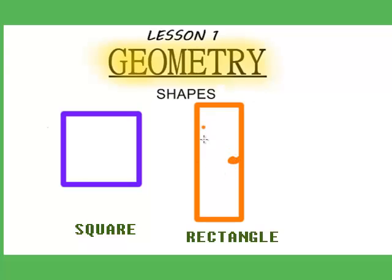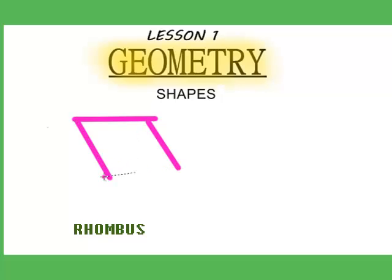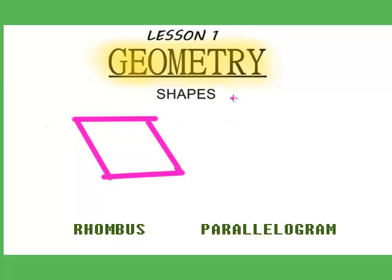So, here's a doorknob. A rectangle is like a stretched square, as you can see — it's stretched upwards. Another quadrilateral is a rhombus, which is very like a square, but it's kind of like an elephant sat on the square, which made it fall over, and now it's a rhombus. And a stretched rhombus, or a rectangle that an elephant sat on, is called a parallelogram. Here's a parallelogram.